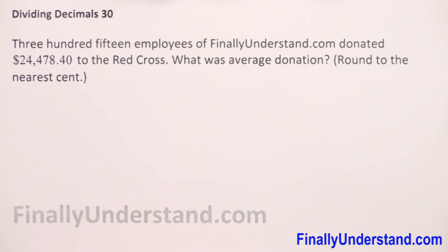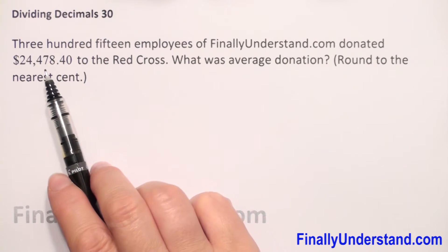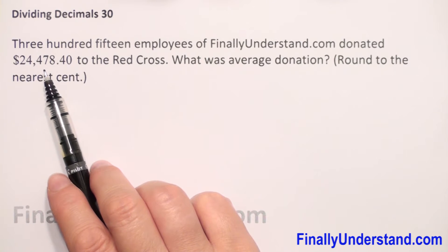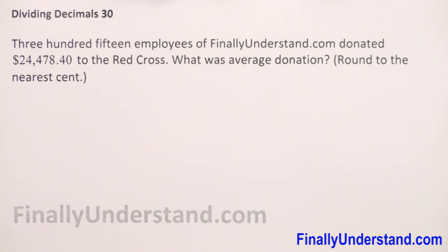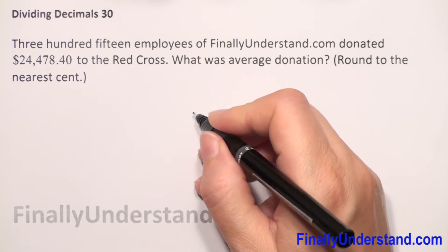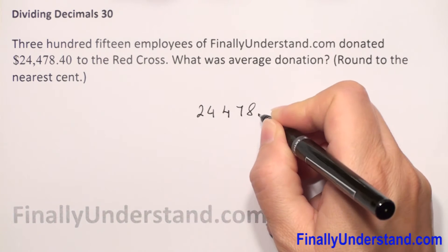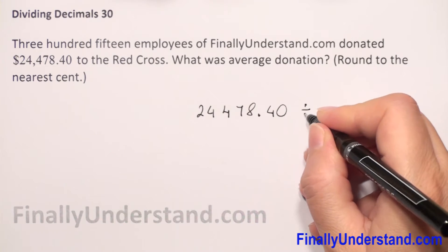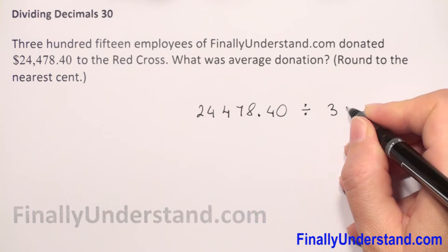To find the average donation, we are given the number of employees and the total donation. We have to divide the total donation by the number of employees. So the donation was $24,478.40 divided by 315 employees.